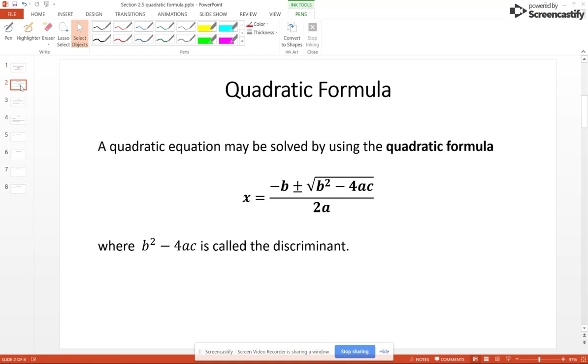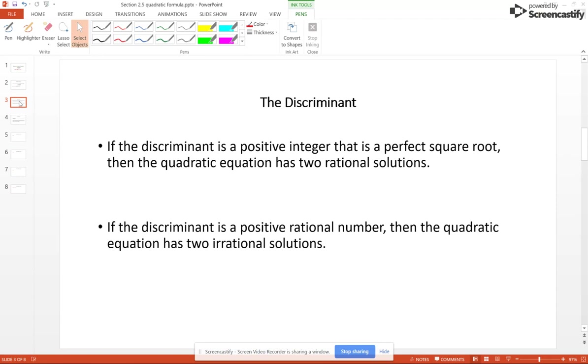The terms under the radical, b squared minus 4ac, is called the discriminant. The discriminant lets you know how many solutions you have and of what type of numbers they are. For example, if your discriminant is a perfect square root, say square root of 49, which is 7 or plus minus 7 technically, then you're going to have two rational solutions.